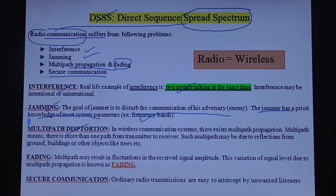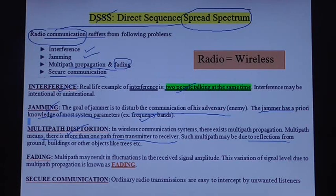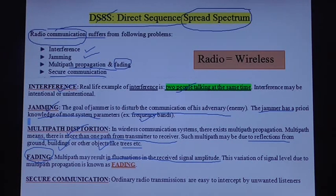Multipath distortion: multipath refers to more than one path from transmitter to receiver. This multipath may be due to reflections from the ground, buildings, and other objects like trees. Fading is also one of the disadvantages of a radio communication system — it is the fluctuations in received signal amplitude. On lack of secure communications, ordinary radio transmissions are easy to intercept by unwanted listeners.